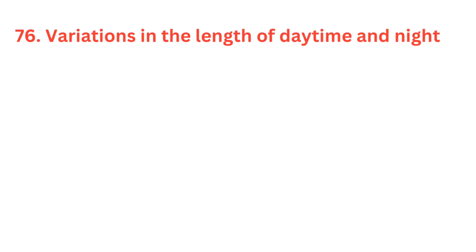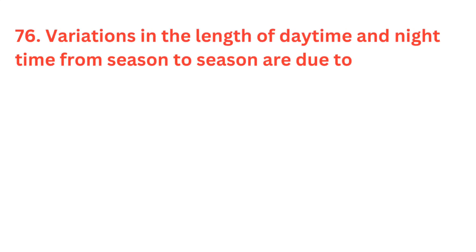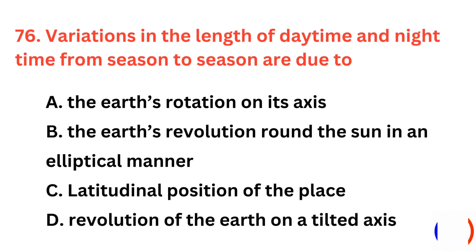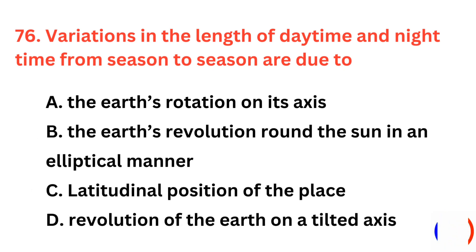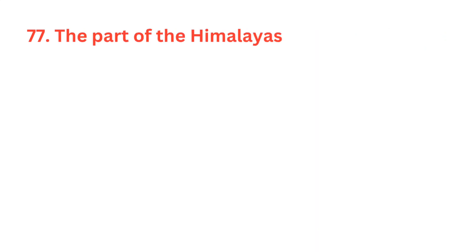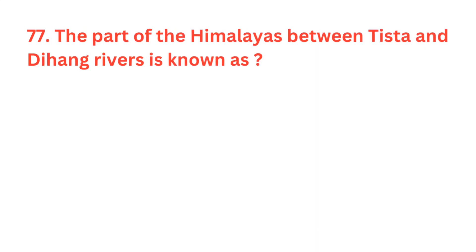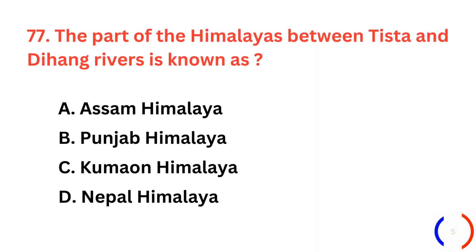Variations in the length of daytime and nighttime from season to season are due to? The correct answer is option D, revolution of the earth on a tilted axis. The part of the Himalayas between Tista and Diham rivers is known as? The correct answer is option A, Assam Himalaya.